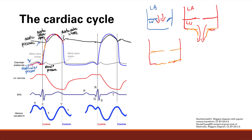Now this is the point where we have relaxation of the left ventricle. It's going to relax until the mitral valve opens again. And I want to point out that during this whole time — during systole, while the left ventricle was contracting — the atrium was filling up again. That mitral valve was closed, so blood was flowing into the left atrium and building up there.